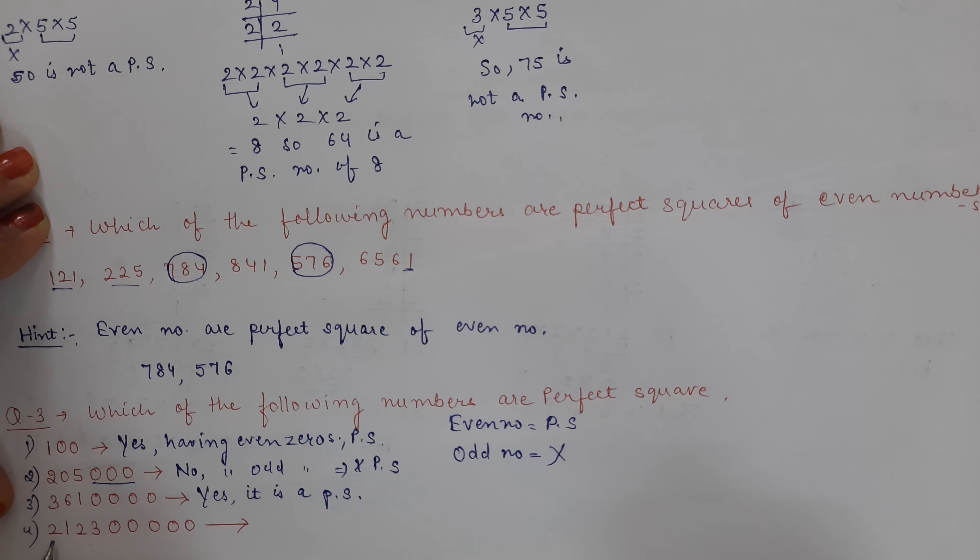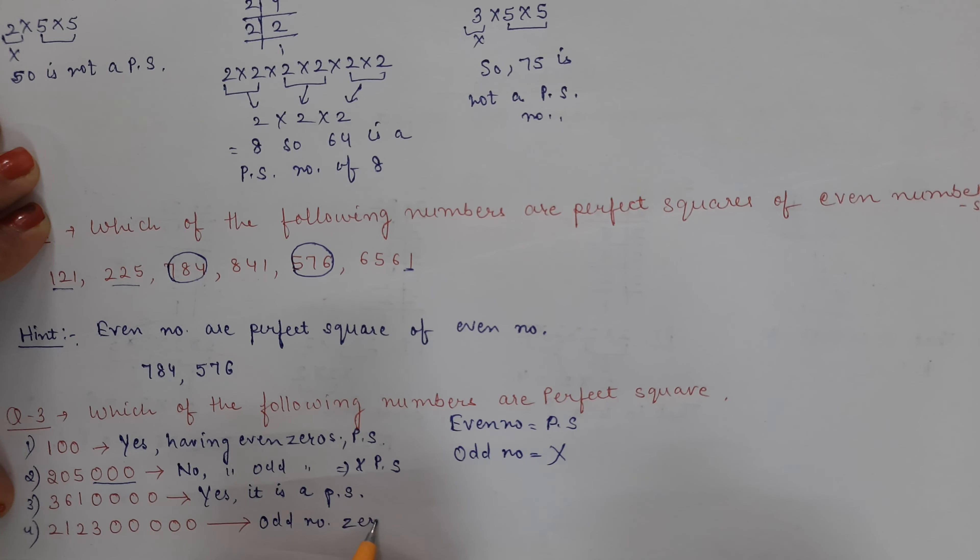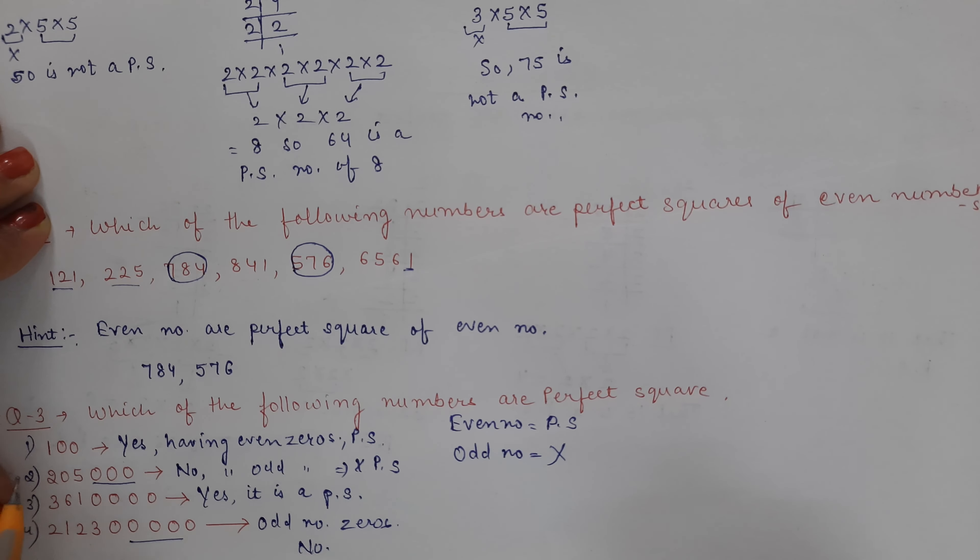Fourth one is 2, 1, 2, 3, 0, 0, 0, 0, 0. How many zeros is it? One, two, three, four, five. Again, it's an odd number of zeros. So what will happen? Perfect square? No, it's not a perfect square number.